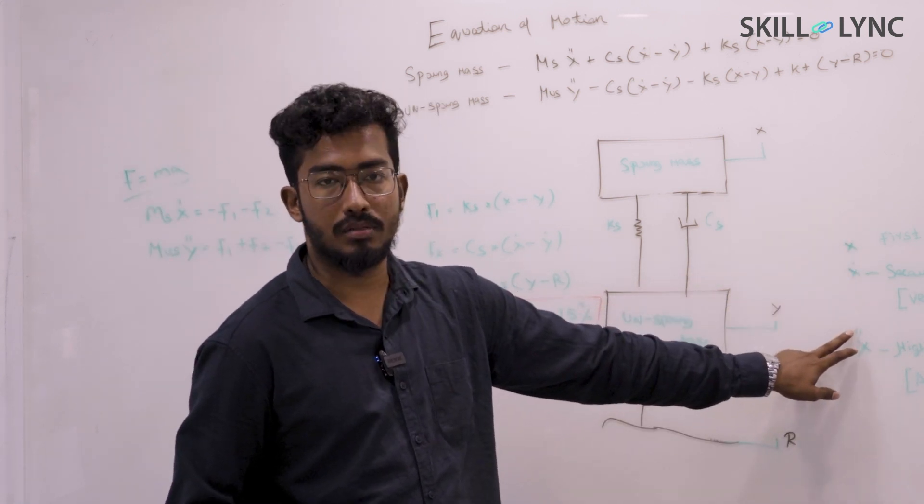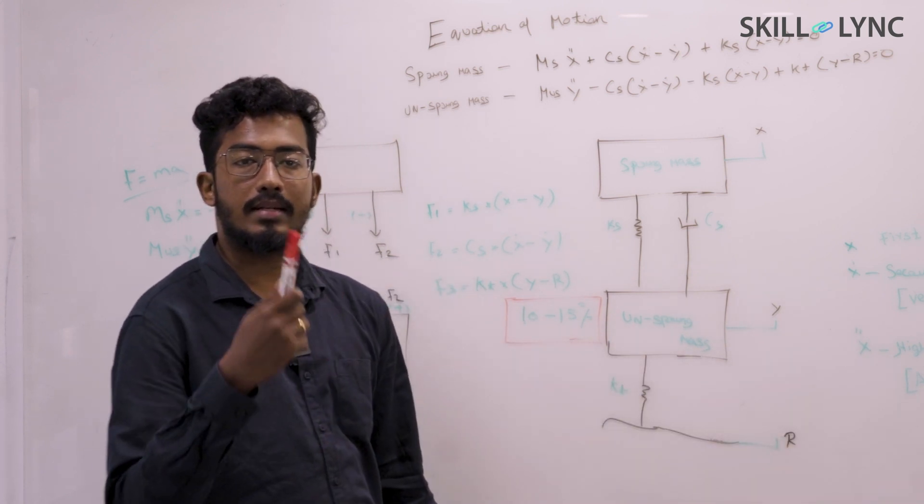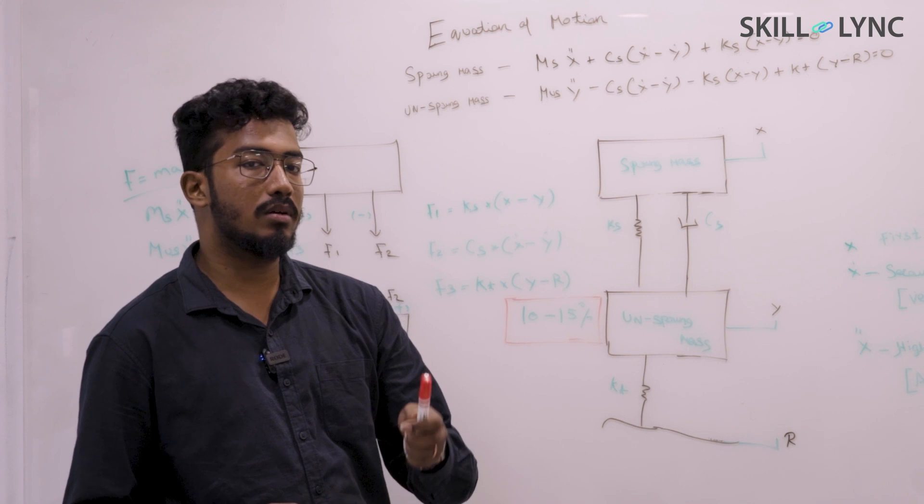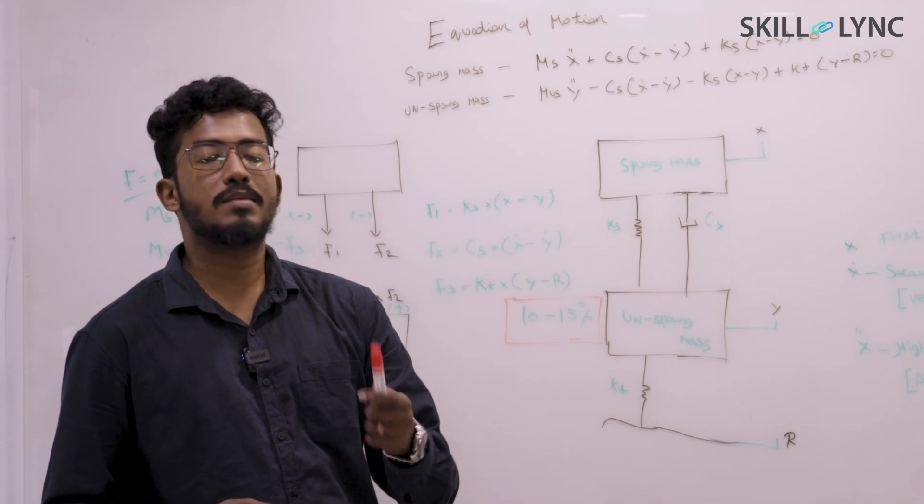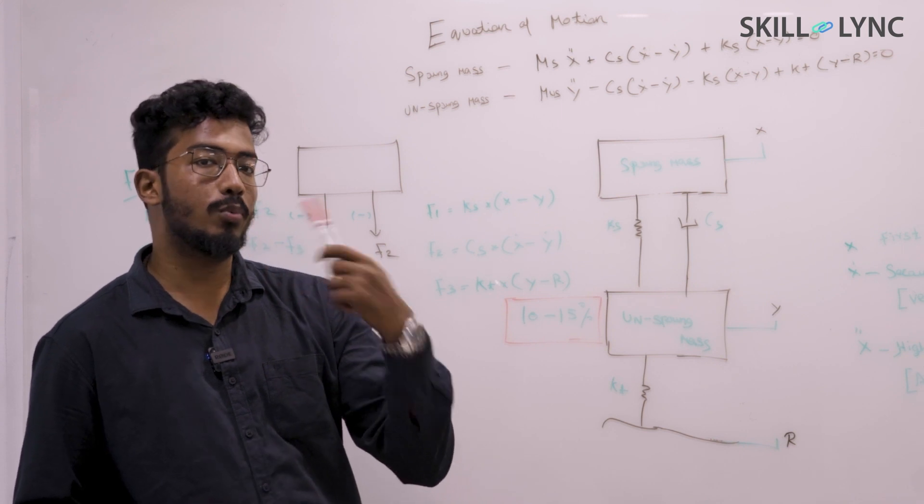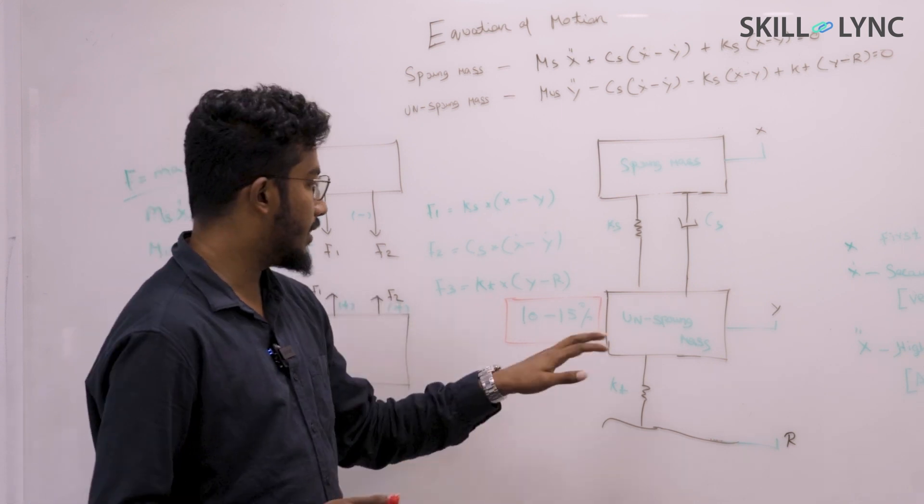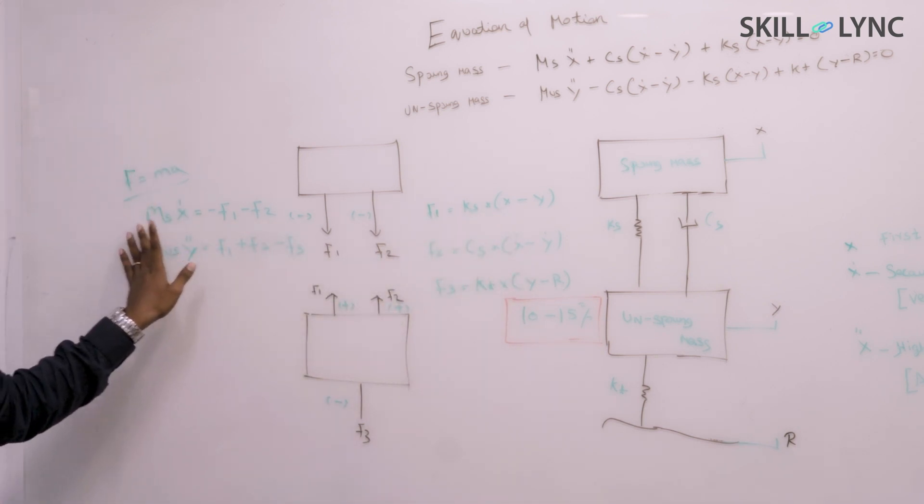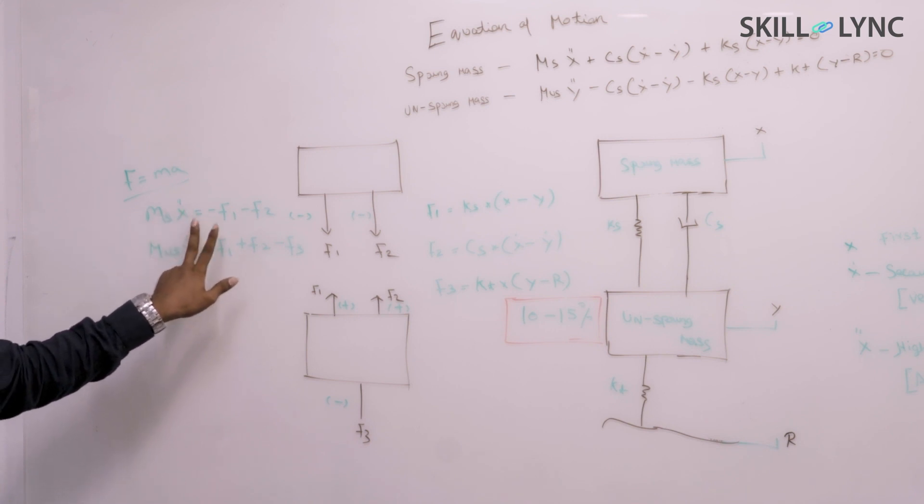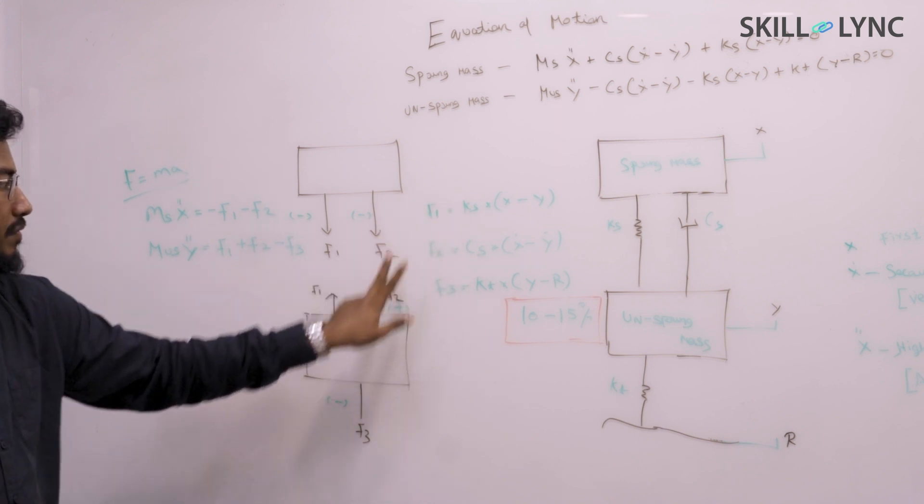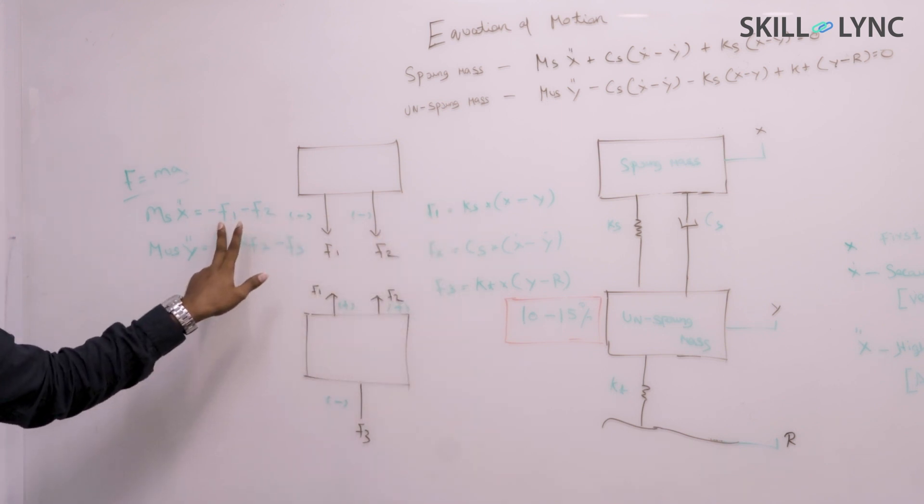Whenever I touch upon damping, only the velocity is coming into picture. You can see the dot represents velocity, and another dot represents acceleration. So it's always dampers are velocity-sensitive in nature, whereas your springs are displacement-sensitive in nature. They only respond to vehicle displacement.